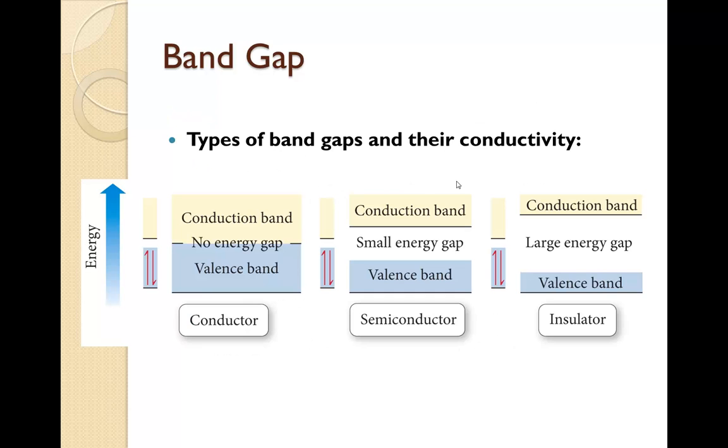So let's take a look at this. If there is no gap, then it's considered a conductor, because that means the valence electrons can go up to the next level fairly easily. If it's only a small gap, it's a semiconductor. Some of them can make it up there, but not all of them.